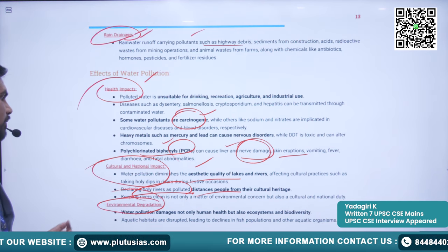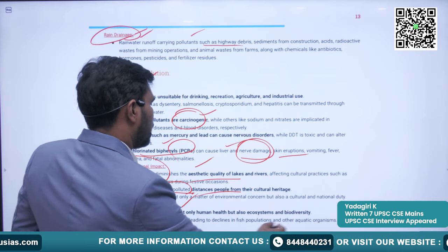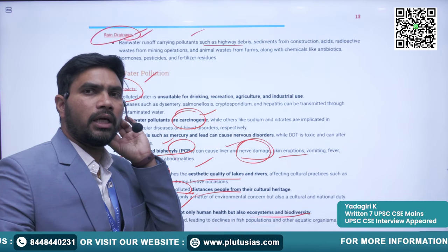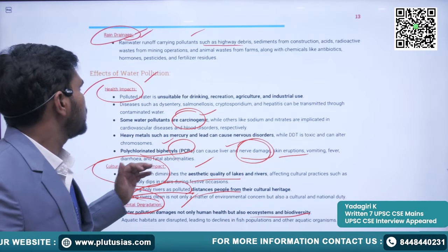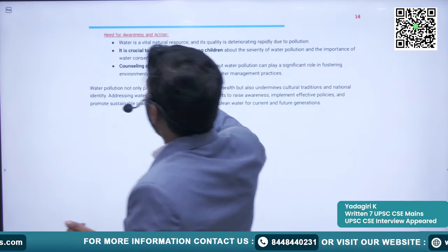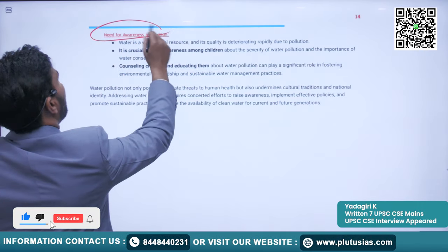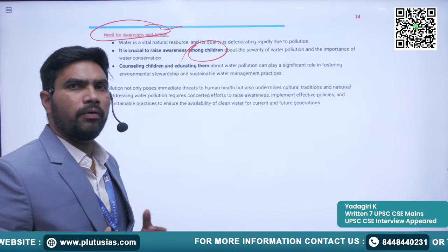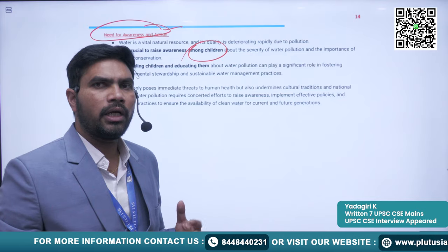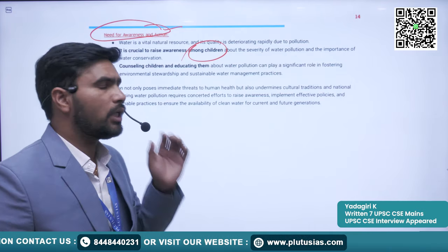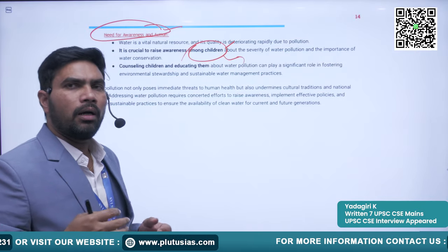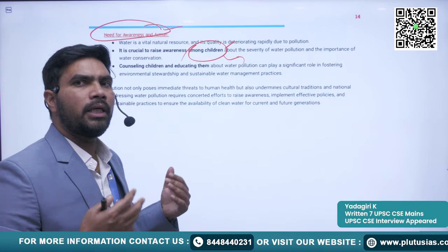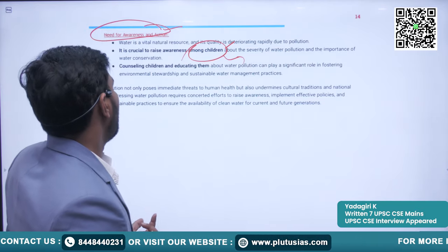Environmental degradation is another important effect — water pollution damages not only human health but also ecosystems and biodiversity, affecting dependent wildlife. There is also a need for awareness generation and action to prevent water pollution. Children are an important stakeholder in generating awareness about prevention of water pollution and must be educated so that when they become citizens they can contribute to preventing water pollution.